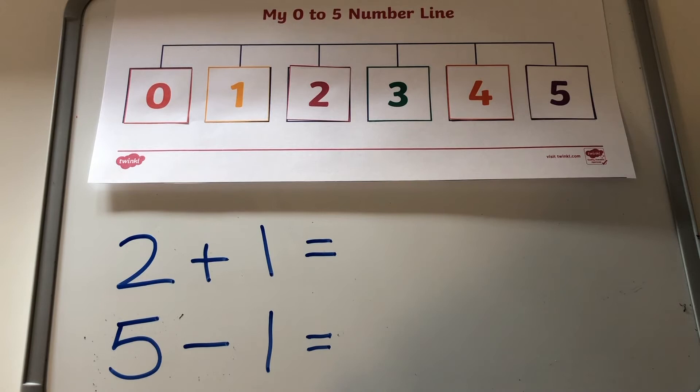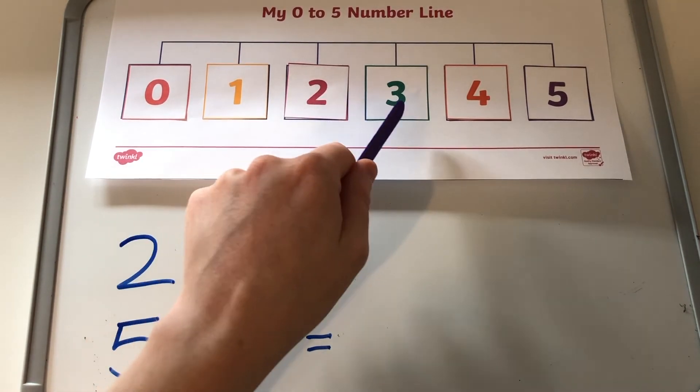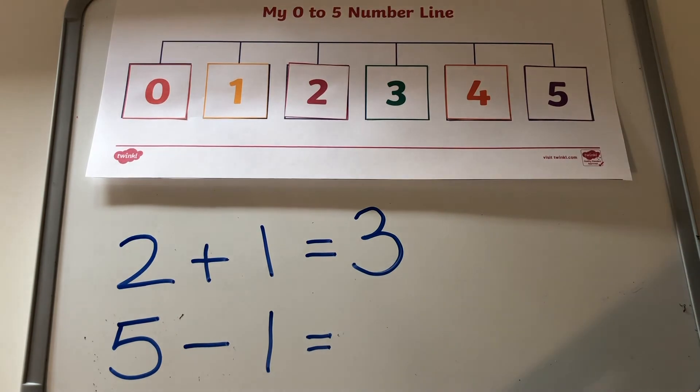Number lines can be particularly useful for adding and taking away one. Children can look to see what the next number is to add one and what the number before is to take away one.